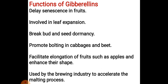They promote bolting in cabbages and beetroot. Bolting means internode elongation — the internodes elongate. This is also promoted in other plants with a rosette habit. Rosette means a bushy-like appearance, as you may have seen in cabbage, where the leaves give a bushy appearance and then the fruit develops.